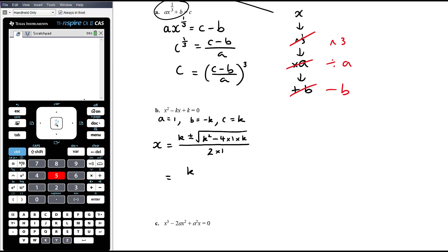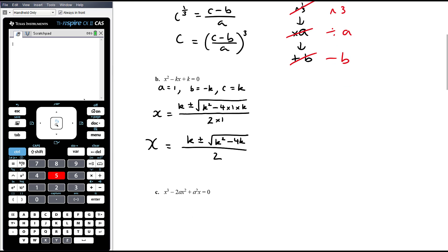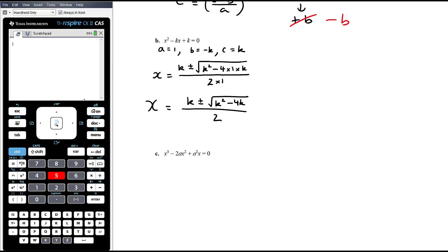All right, so we're going to have k plus or minus the square root of k squared minus 4k all over 2. There's not much we can do with that. There's no square number that will come out that's a common factor to all of that that could come out of the third, so there's no simplification we can do. So pretty straightforward, really just subbing straight into quadratic formula and then you're done.